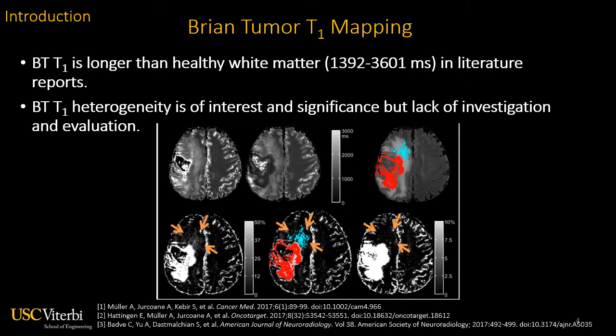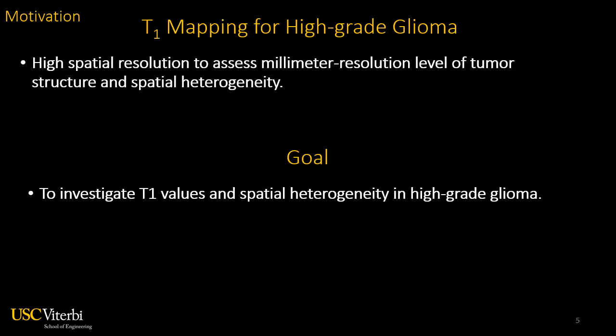As shown in the previous slide, accurate DCE brain tumor assessment requires accurate brain tumor T1 values. In literature, brain tumor T1 is found to be longer than healthy white matter. T1-weighted brain images also empirically show that brain tumor T1 is potentially heterogeneous. This highlights the interest and significance of studying brain tumor T1 heterogeneity. So, as motivated, the study evaluated a recent high-resolution whole-brain T1 mapping approach and investigated T1 values and spatial heterogeneity in high-grade glioma.